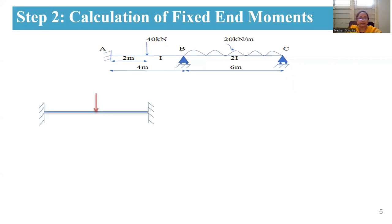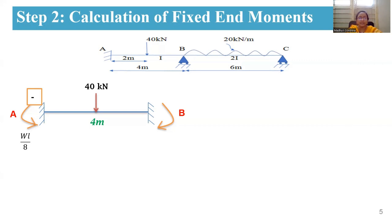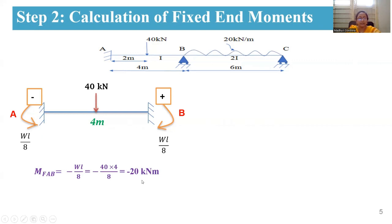Considering span AB with a 40 kN center point load over a 4-meter span: hogging moments develop at A and B. At A, the moment is anticlockwise, so it is negative by the slope deflection sign convention, giving mf_AB = −WL/8 = −20 kN·m. At B, the moment is clockwise, so it is positive, giving mf_BA = +WL/8 = +20 kN·m.